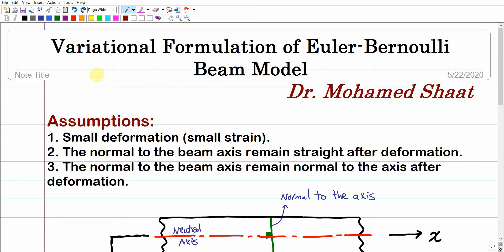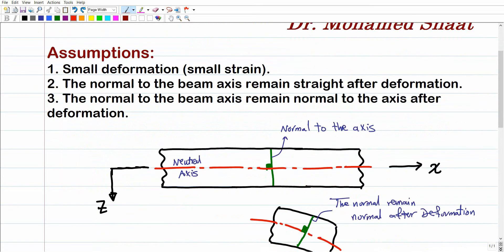Hello everyone, welcome to the linear elasticity course. In this video, I'm going to show you how we can derive the Euler-Bernoulli beam model based on the variational principle of minimum potential energy. This is the variational formulation of the Euler-Bernoulli beam model. The Euler-Bernoulli beam is a beam theory — one of the simplest forms, and it is used in many applications involving beam structures.